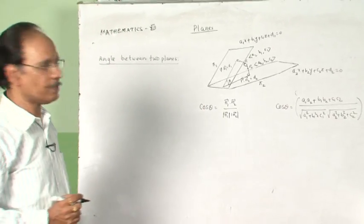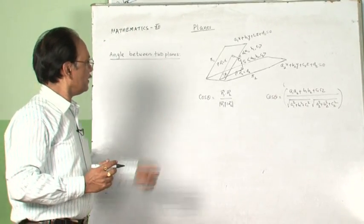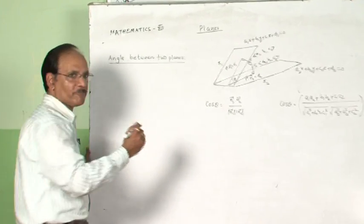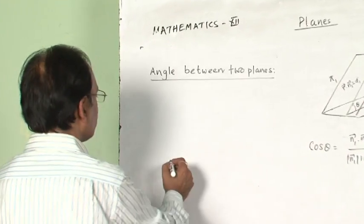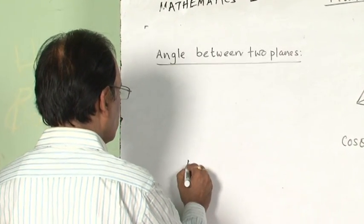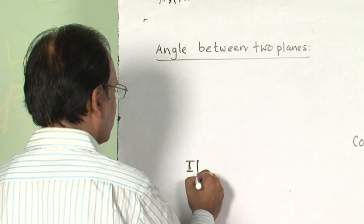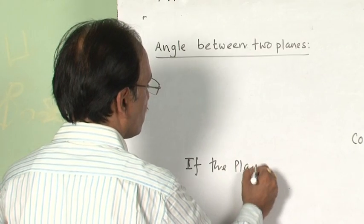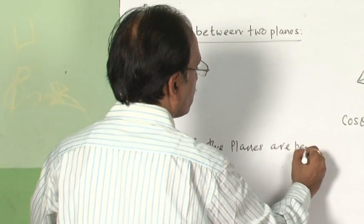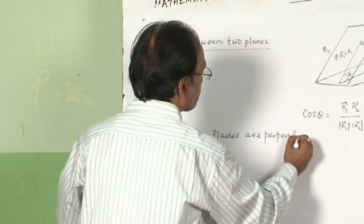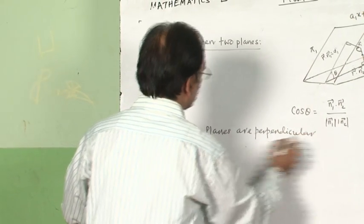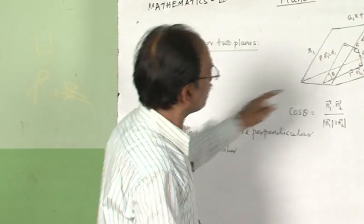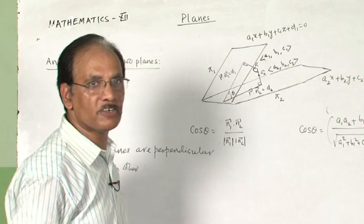So you have the formulas. Now we will discuss different cases: when the planes are parallel and when the planes are perpendicular. If the planes are perpendicular to each other, then the normals will also be perpendicular to each other, so theta will be 90 degrees.